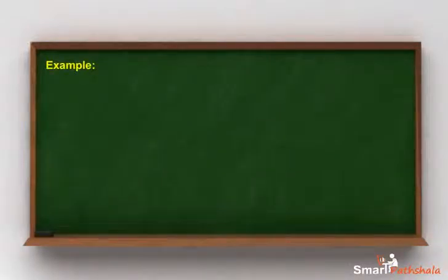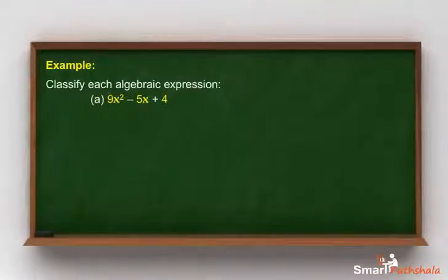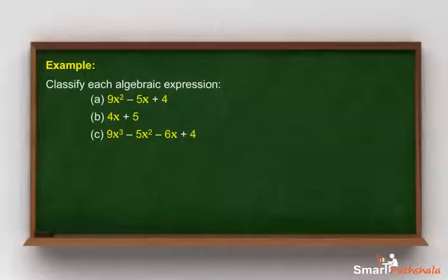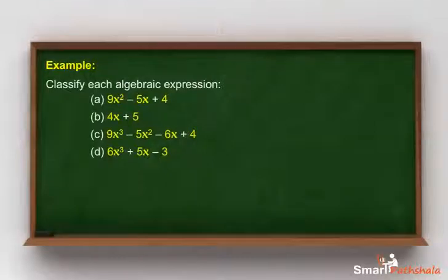Example: classify each algebraic expression. A: 9x squared minus 5x plus 4. B: 4x plus 5. C: 9x cubed minus 5x squared minus 6x plus 4. D: 6x cubed plus 5x minus 3. E: 4x.